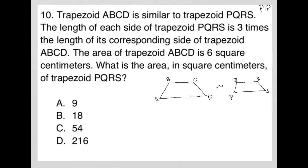So if I call this, for instance, little a and little b and little c and little d, that means this would be three times a, right? And three times b and three times c and three times d because that's what the question just told us, that they're all three times the length of the corresponding side of the other trapezoid.